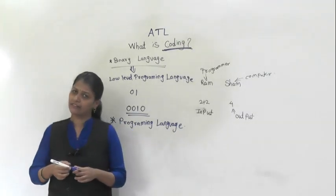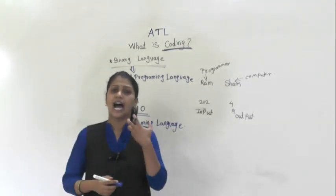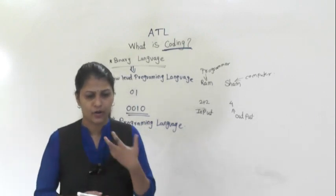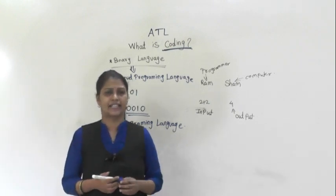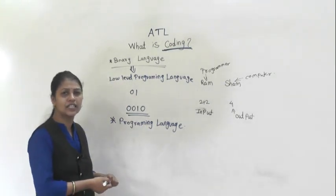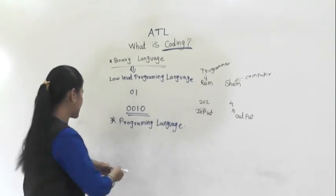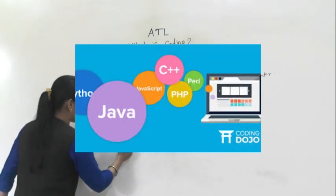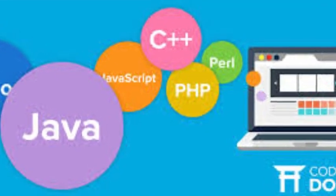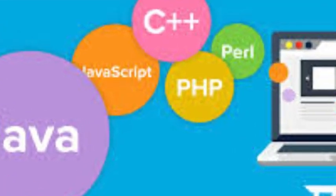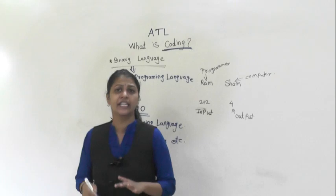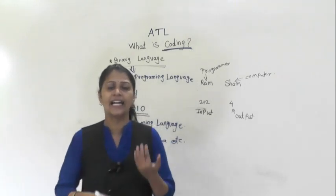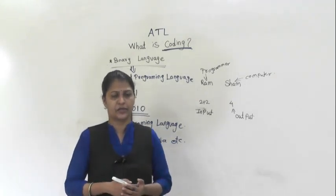A programming language is a high-level language that can be understood by the computer. You might have heard of different programming languages such as C, C++, Java, and others. These are all high-level programming languages.